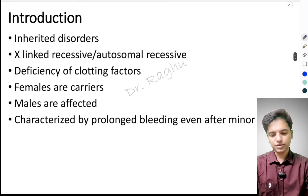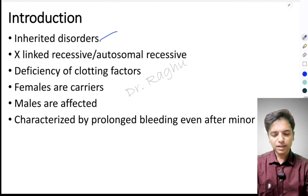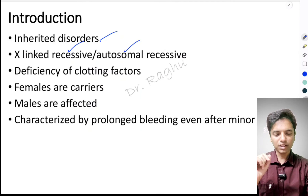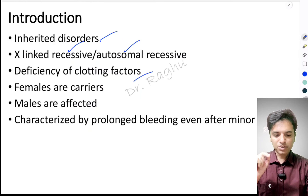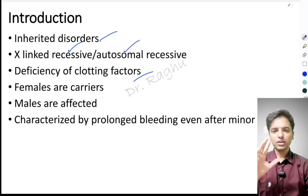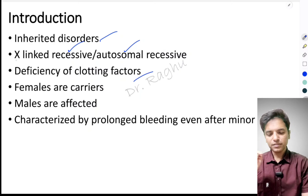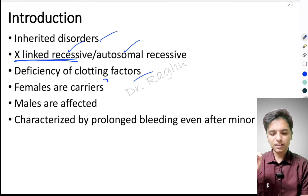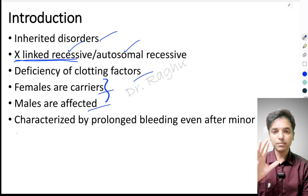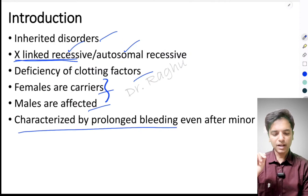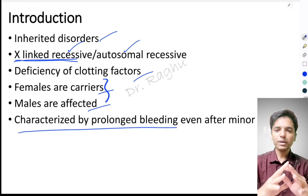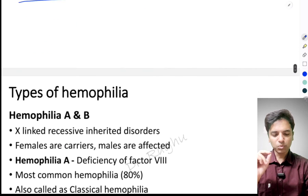Hemophilia is an inherited disorder. It is inherited in two forms: it could be X-linked recessive or autosomal recessive. It occurs because of the deficiency of clotting factors. If it is X-linked recessive, the females are carriers and only the males are affected, and it is characterized by prolonged bleeding even after a very small injury.